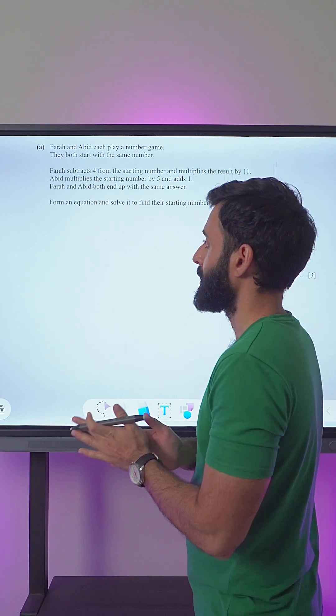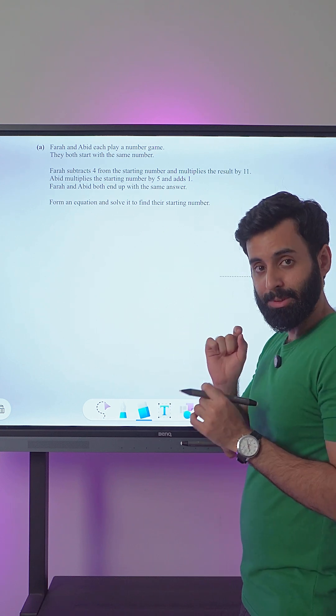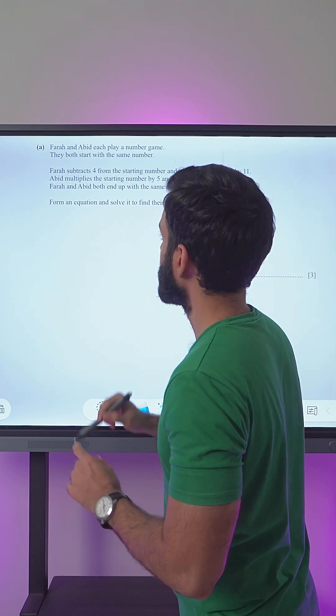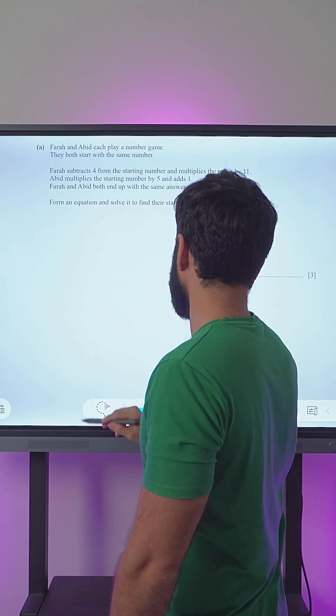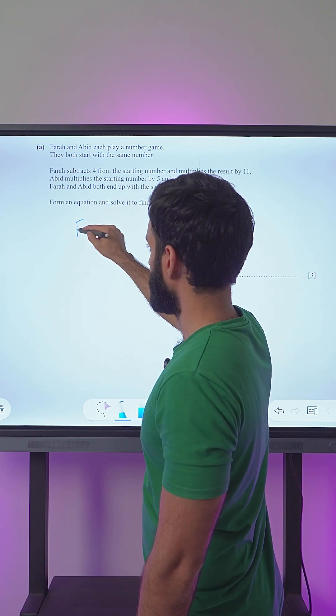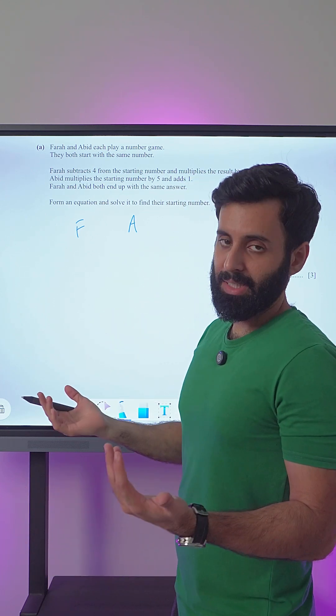Farah and Abid both end up with the same answer. Okay, so remember I've read the question once, now I'm going to read it again, this time looking for specific information. Farah and Abid each play a number game. They both start with the same number, so let's make a column for Farah, another column for Abid. If they're both starting with the same number, we don't know what that number is, let's call it x.